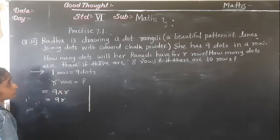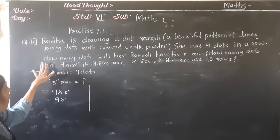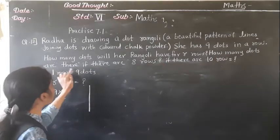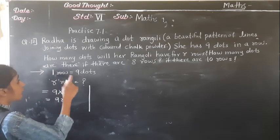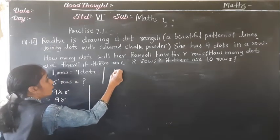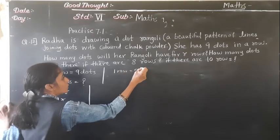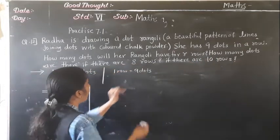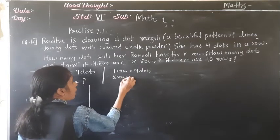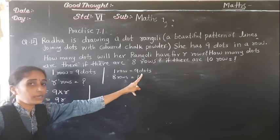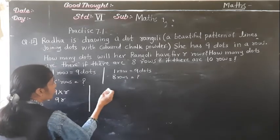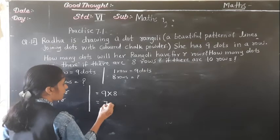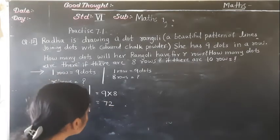Next, how many dots are there if there are 8 rows? In 1 row there are 9 dots, so for 8 rows we do 9 multiplied by 8. The answer is 72 dots. 9 eights are 72.